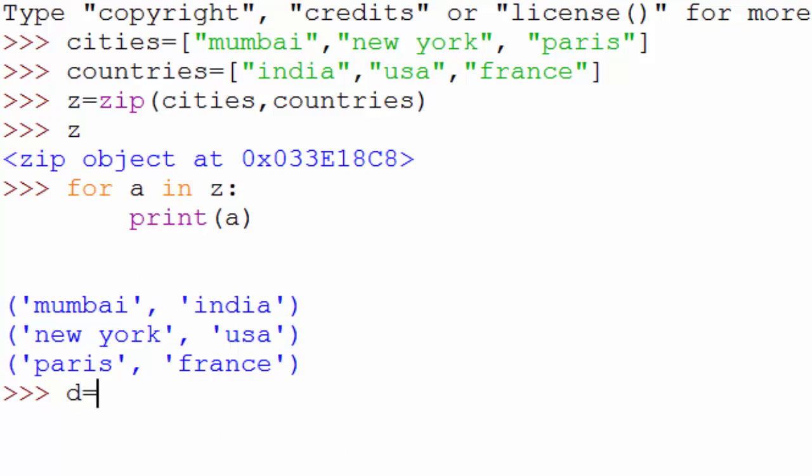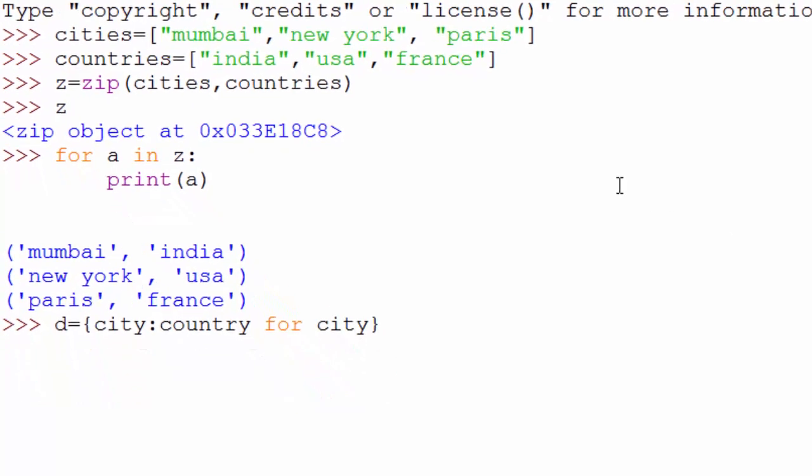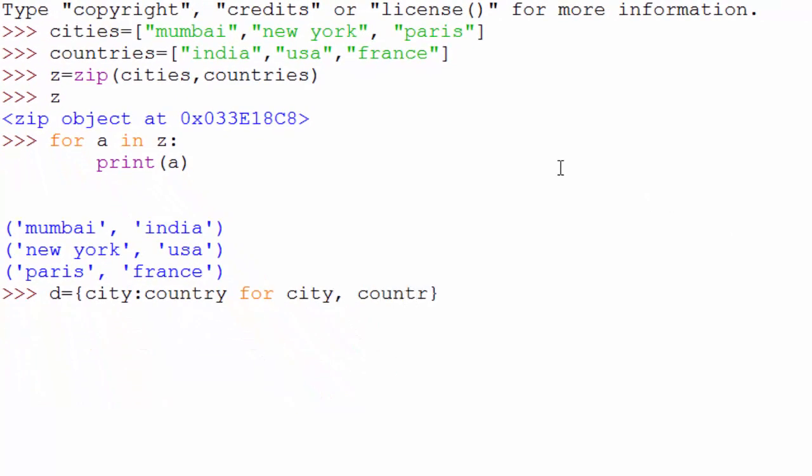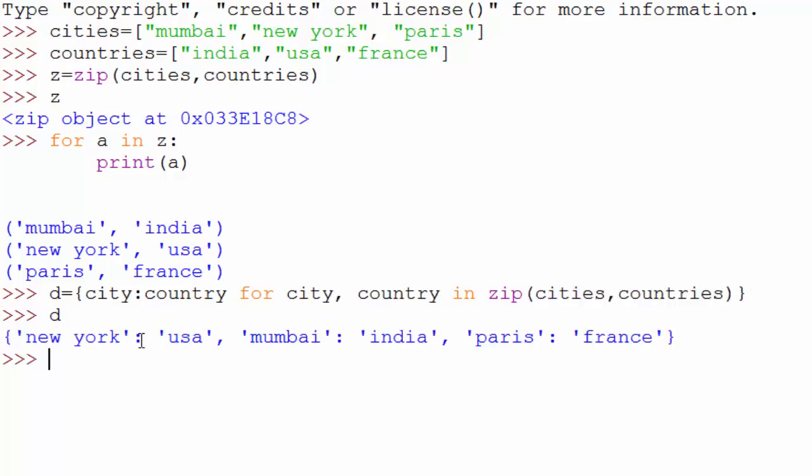So we're going to use zip function in our dictionary comprehension. So again the syntax is similar to set where you use curly bracket and here you will say city colon country. So this format represents each element in a dictionary and in dictionary as you know there is a key and after colon there is a value. So here now I will say for city, country in zip cities, countries. If I print d then you can see that it generated city country dictionary.